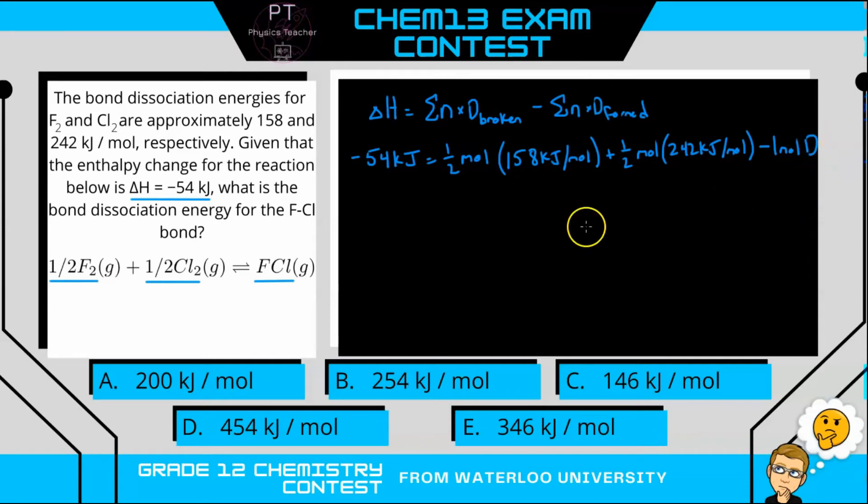So if we rearrange this equation, we have one mole times D. We'll just bring this to the other side of the equation to make it positive. And then we have one half times 158, the moles cancel, and that gives us 79 kJ.